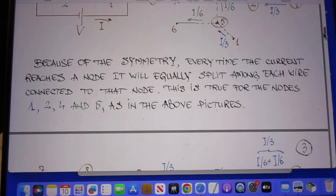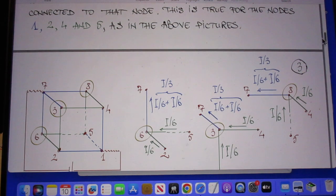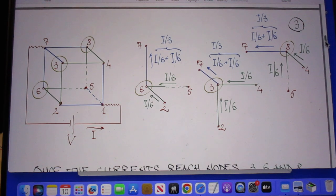Because of the symmetry, every time the current reaches a node, it will equally split among each wire connected to that node. And you see that once more here. So this is self-explanatory. I don't have to go over that in any more detail.